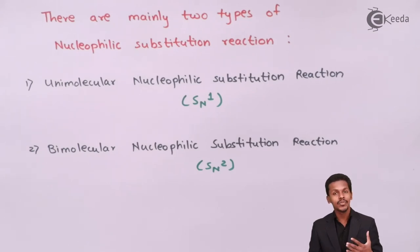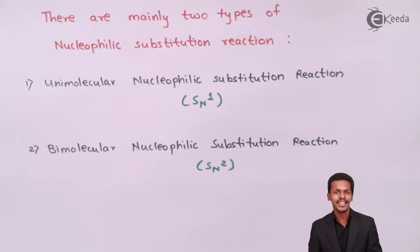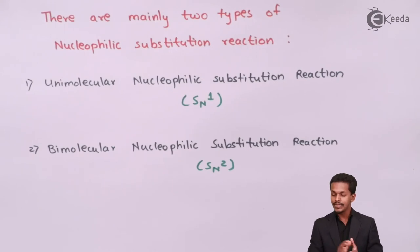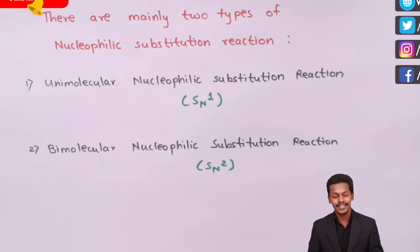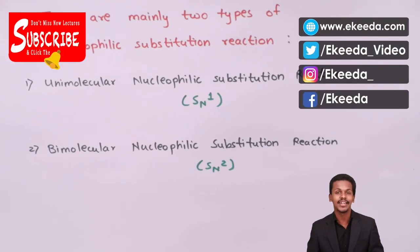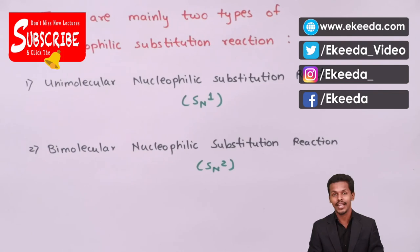This concept of bimolecular and unimolecular is related to what we have studied in the chapter on chemical kinetics, and it is applicable here as well. So this is the nucleophilic substitution reaction and its types. More details will be covered in the next lecture. Thank you friends for watching — I hope you understood clearly. Please stay tuned with the Ekeda channel.